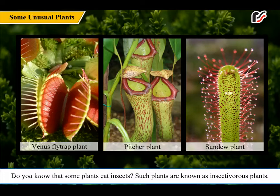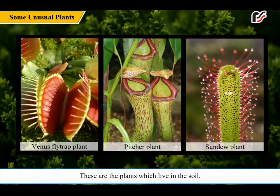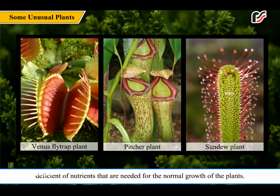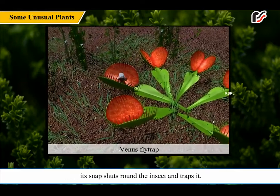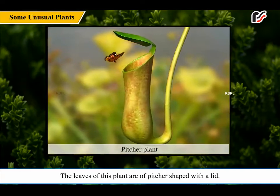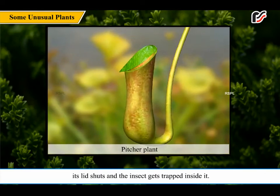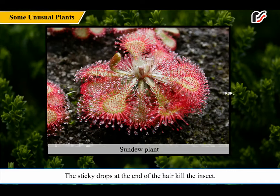Do you know that some plants eat insects? Such plants are known as insectivorous plants. They trap the insects and absorb the nutrients from their bodies. These are plants which live in soil deficient in nutrients needed for normal growth. For example, Venus flytrap plant, pitcher plant, and sundew plant. Whenever an insect like a fly comes and sits on the Venus flytrap's leaf, it snaps shut around the insect and traps it. The pitcher plant has leaves of pitcher shape with a lid; when an insect sits on the mouth of the pitcher-shaped leaf, its lid shuts and the insect gets trapped inside. The sundew plant traps insects on the deadly sticky hairs that cover its leaves. The sticky drops at the end of the hair kill the insect. These plants catch insects, digest them, and use the nutrients for their normal growth.